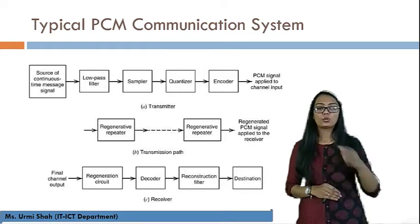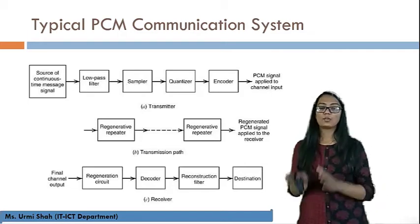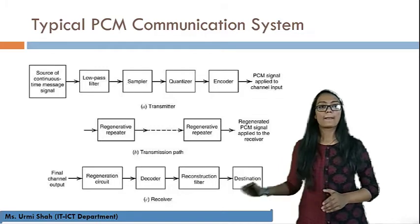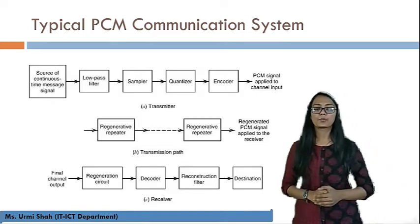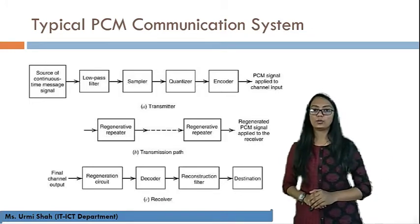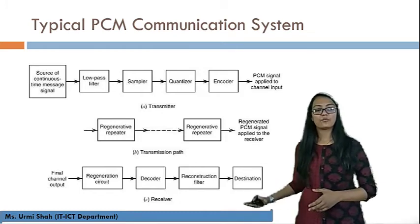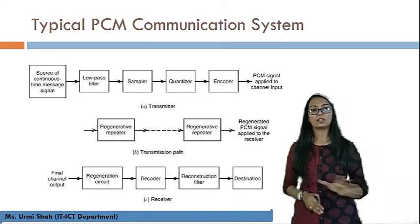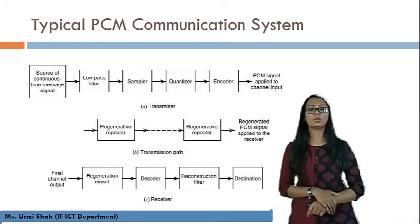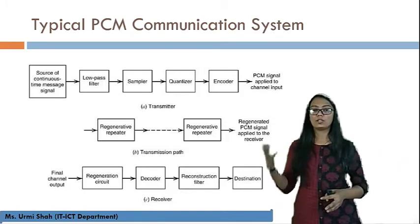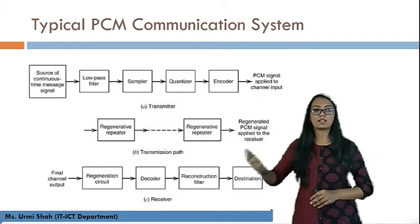From there, the signal is passed to the Regenerative Repeater section, which regenerates the PCM signal that is further applied to the Receiver section. In the receiver, the final channel output is given to the Regeneration Circuit, then processed to the Decoder circuit. The decoder has a Reconstruction Filter which reconstructs the original message signal, and finally it is received at the destination. This is how the complete PCM — Pulse Code Modulation — communication system works, covering transmitter, transmission path, and receiver.